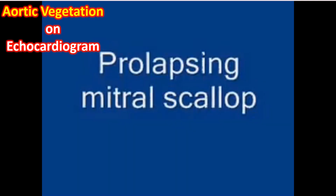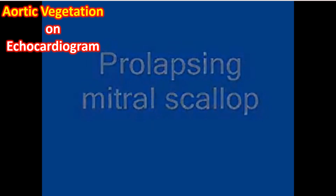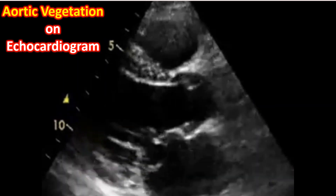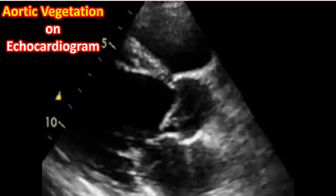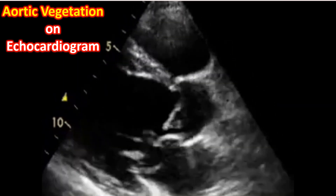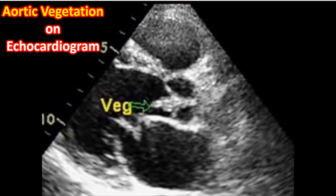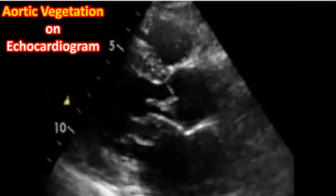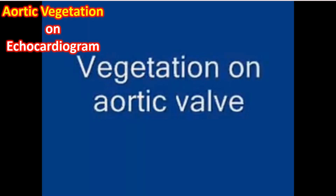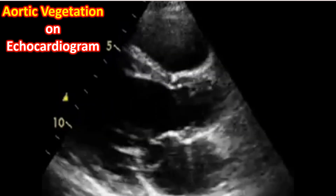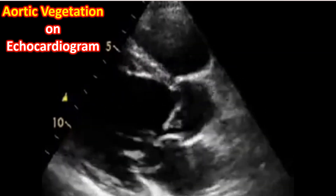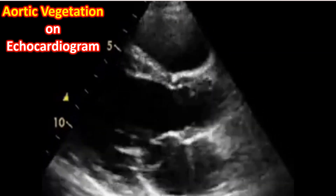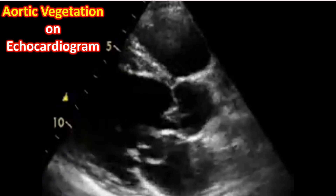In addition, there is prolapsing of a mitral scallop. You can see that in this view, in systole, a scallop of the mitral valve is prolapsing into the left atrium. This is the prolapsing mitral scallop. So there is vegetation on the aortic valve and a prolapsing mitral cusp in systole.